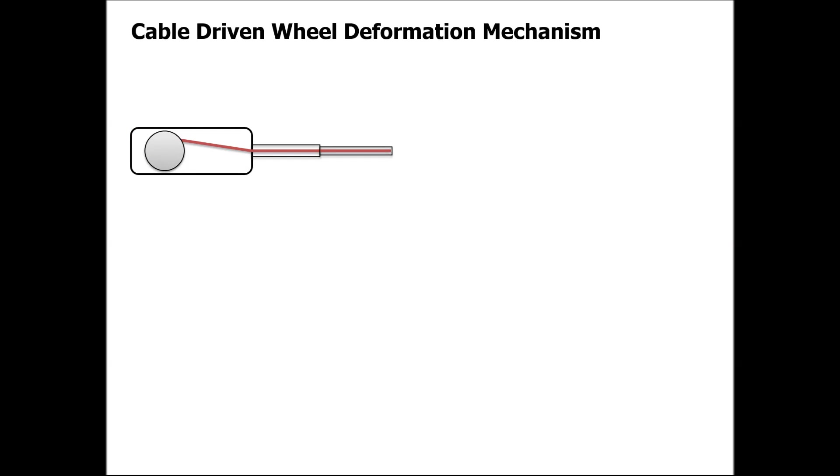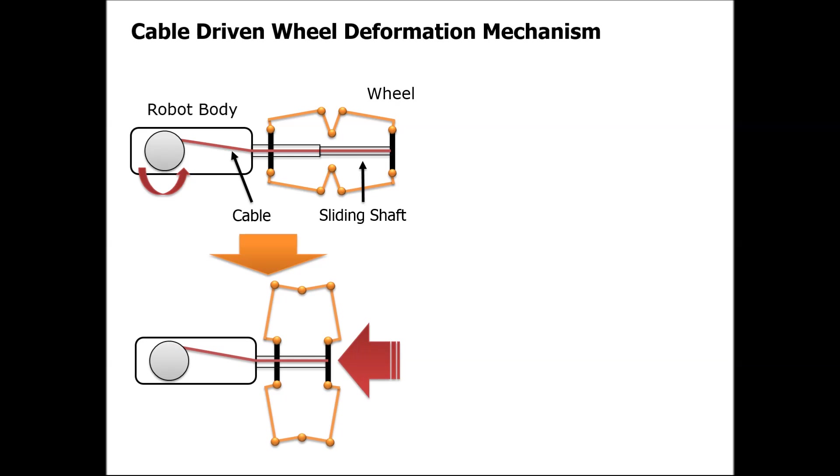In actuation mechanism design, we designed the cable-driven mechanism for wheel deformation. This mechanism is composed of motor, sliding shaft, cable, and wheel. When the motor pulls the wire, the wheel diameter becomes larger. There is a rubber band around the wheel, so when the motor unwinds the wire, the wheel returns to the original shape.